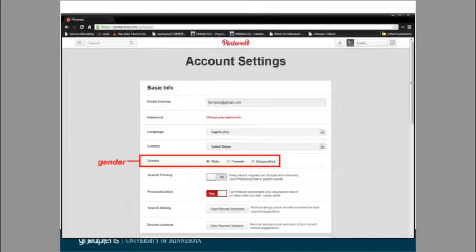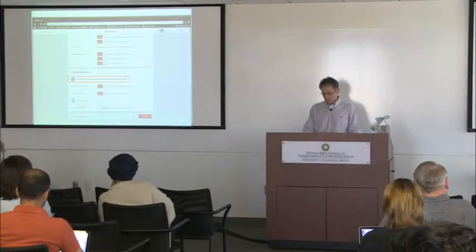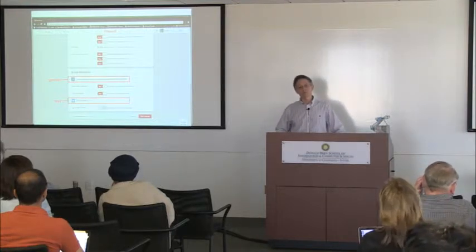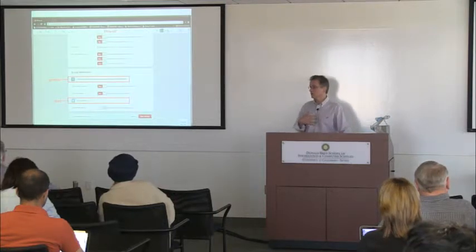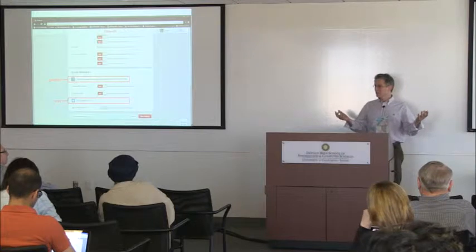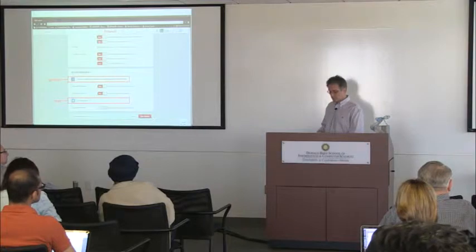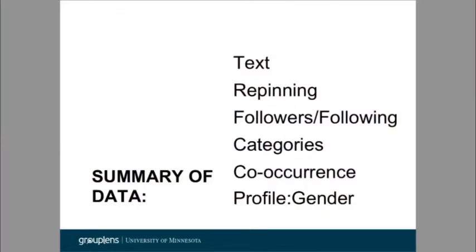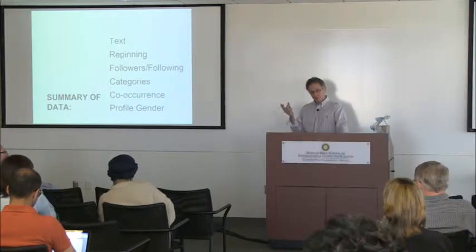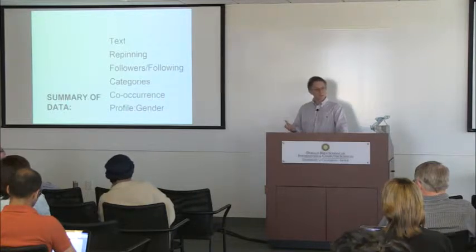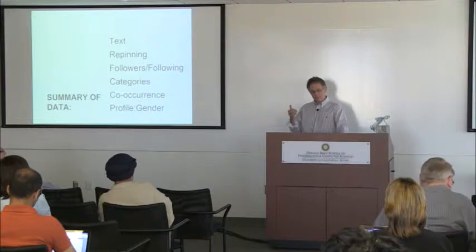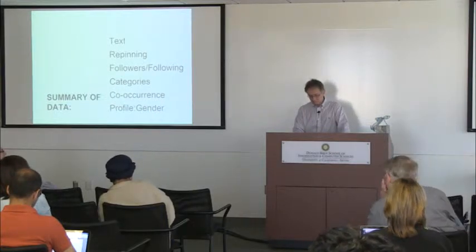We also wanted to get people's gender from their profiles. People can link their Pinterest accounts to other social networks like Facebook or Twitter. From Facebook we can get their gender. Once they link to Twitter, we can go see what they tweet. To summarize the data we collected: text associated with pins and comments, repinning data, social network relationships, followers and following, categories of pins, co-occurrence on multiple boards, and information about a pinner's gender when available.